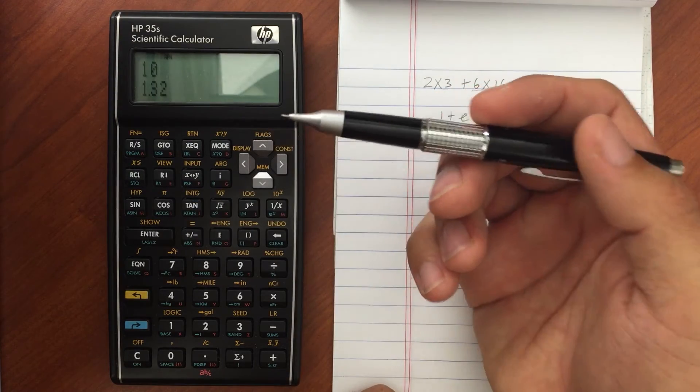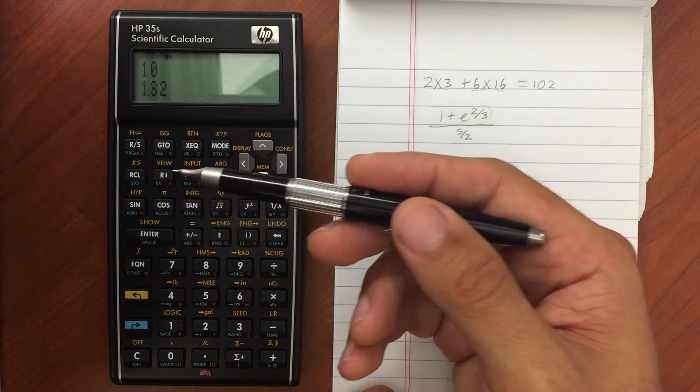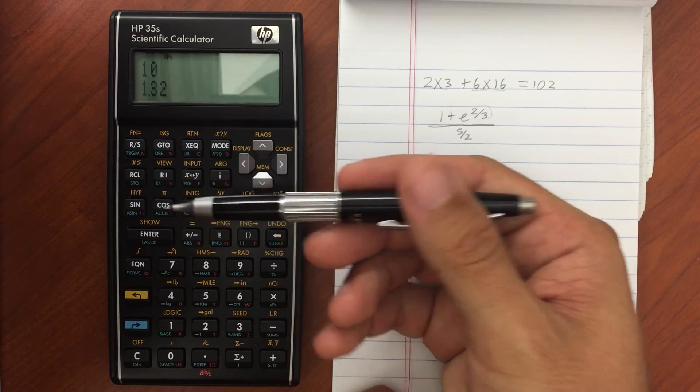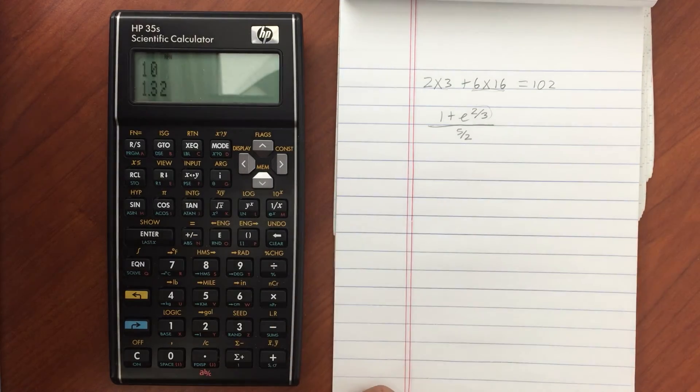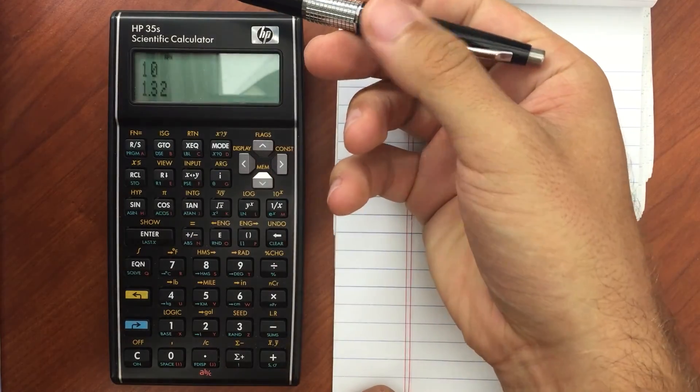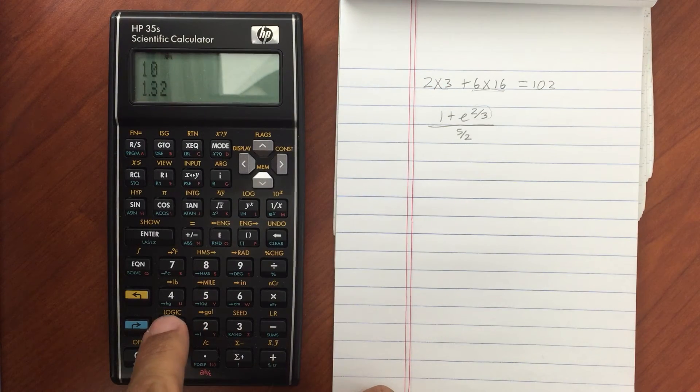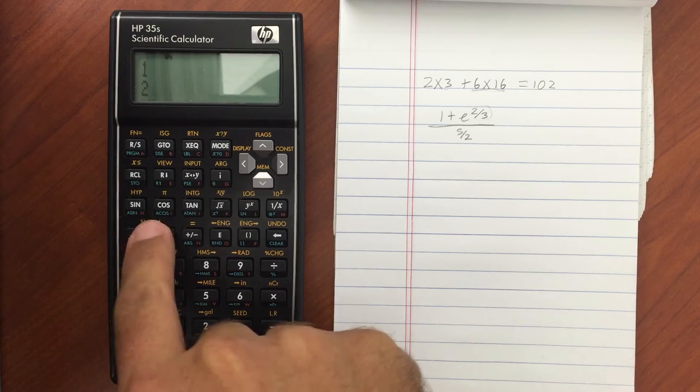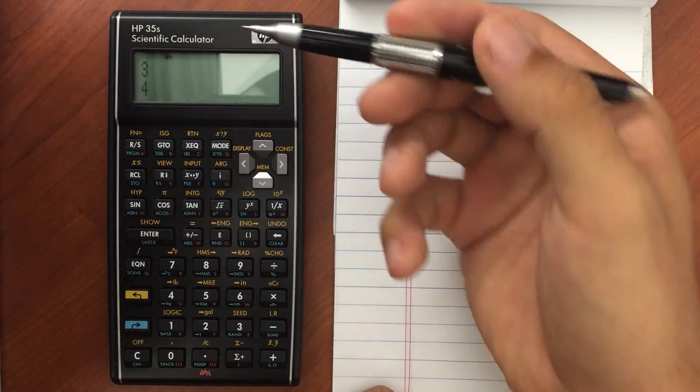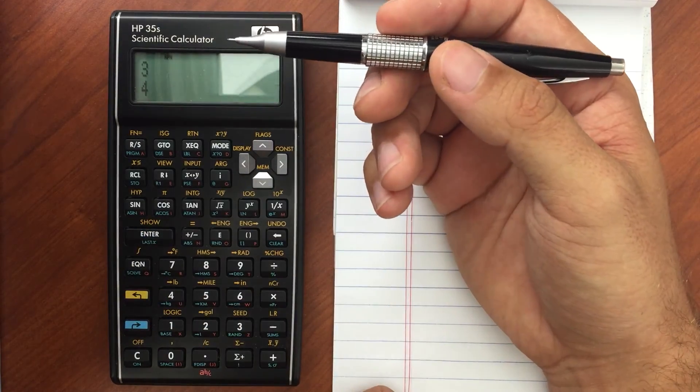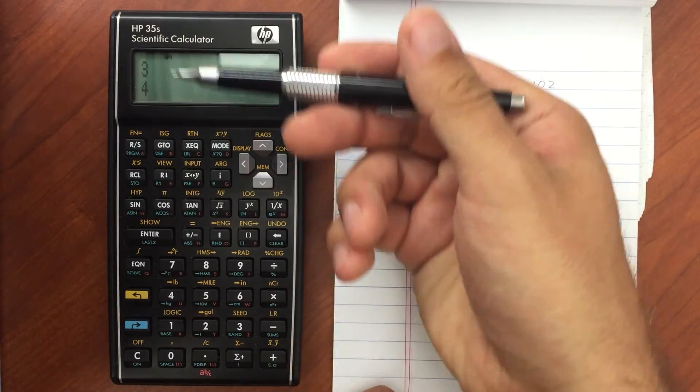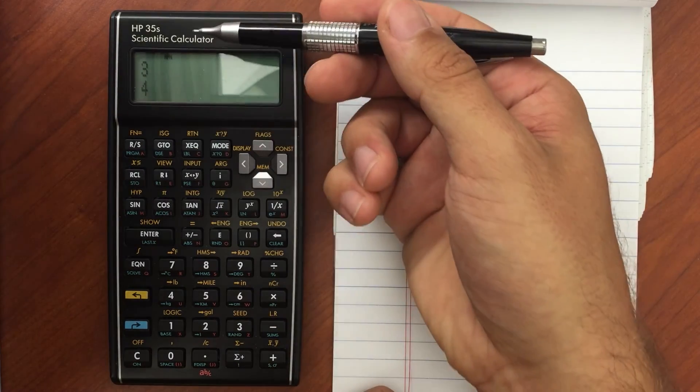The other thing with the stack here is this r down. That means roll down. So say there's a value up somewhere in here in the stack. Let me just enter real quick. So I've got 1, 2, 3, 4. So I've got four values in my stack. If I wanted to roll down and work with the 2.